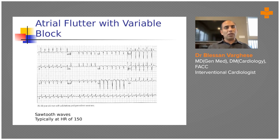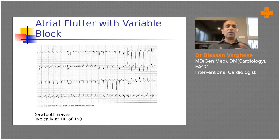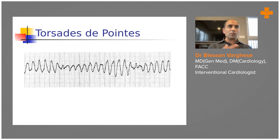Treatment of atrial flutter involves cardioversion with a low voltage — around 50 joules with a biphasic defibrillator — or amiodarone infusion, which usually reverts the rhythm within a few hours. Ibutilide and sotalol are also available options. For prolonged atrial flutter, management is the same as atrial fibrillation: anticoagulate the patient and perform DC cardioversion after a proper duration of anticoagulation.